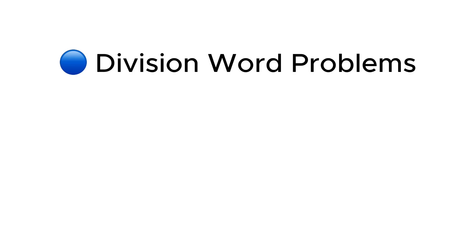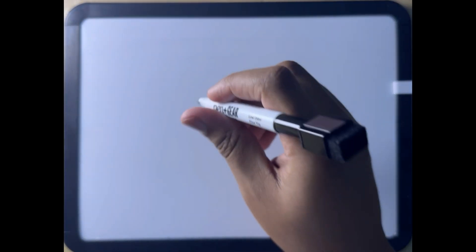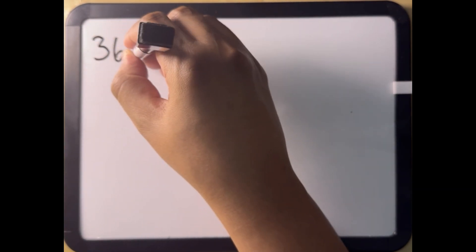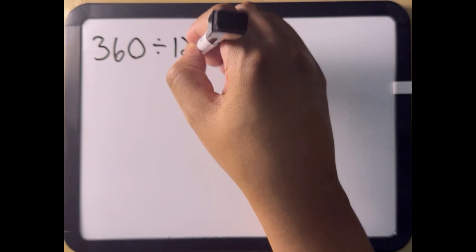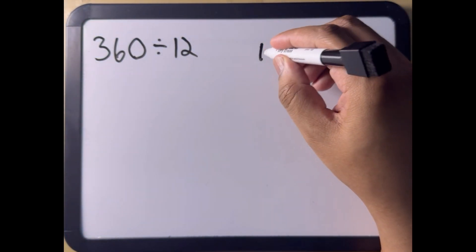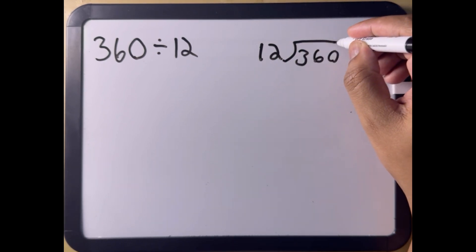Division word problems. A squad has 360 rounds of ammunition. If they need to divide the rounds equally among 12 soldiers, how many rounds will each soldier get? So coming from our word problem, we can write our equation as 360 divided by 12. To solve this manually, we can do 12 divided by 360 written this way.